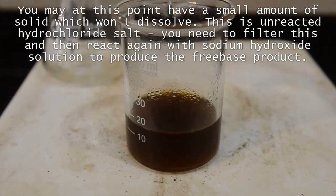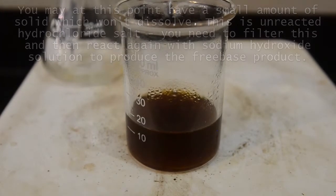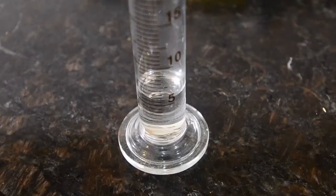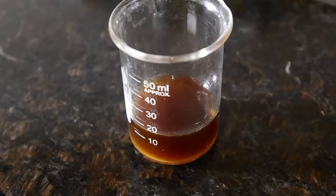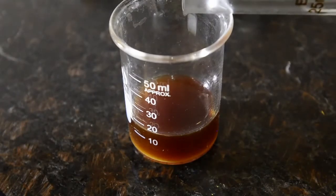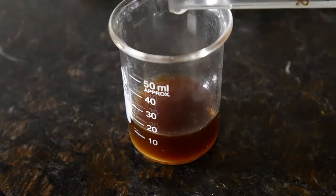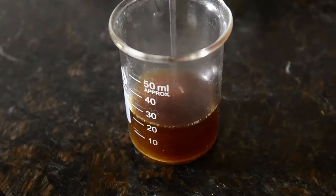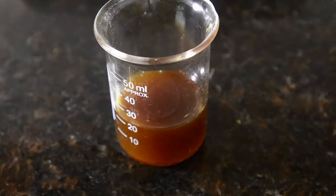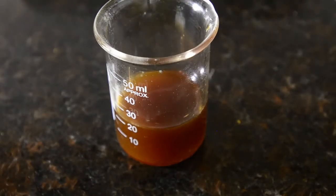Now we've got a solution of our freebase in hot acetone. Prepare 6 mls of concentrated hydrochloric acid. And allowing the acetone to cool slightly, carefully add the acid. The mixture may get hot and even boil so be cautious. You can chill this down and crystallize but it results in losses of product.